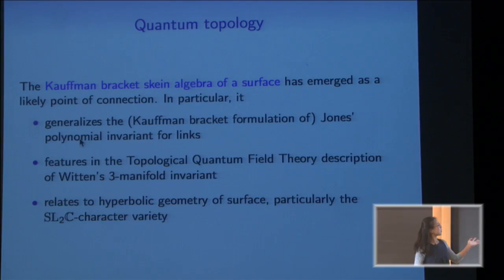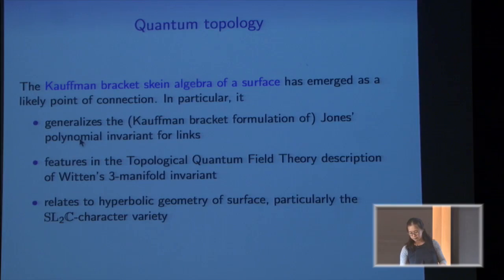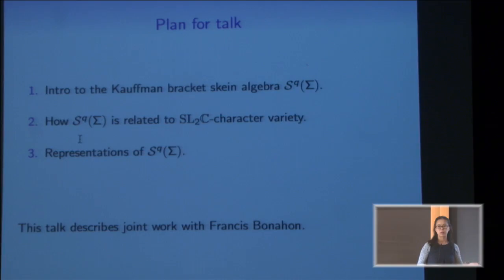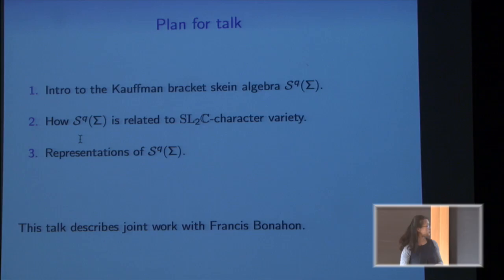This is where the Kauffman bracket skein algebra comes in. It comes directly from the quantum invariants — from the Jones polynomial and Witten's three-dimensional invariants — but it's also related to hyperbolic geometry and in particular the SL2C character variety, making it an interesting thing to study. What I'd like to do today is explain some definitions and discuss its algebraic structure, talk about why it's interesting in terms of hyperbolic geometry, and then discuss some work on the representations of this skein algebra — all in long-standing collaboration with Francis Bonahon.